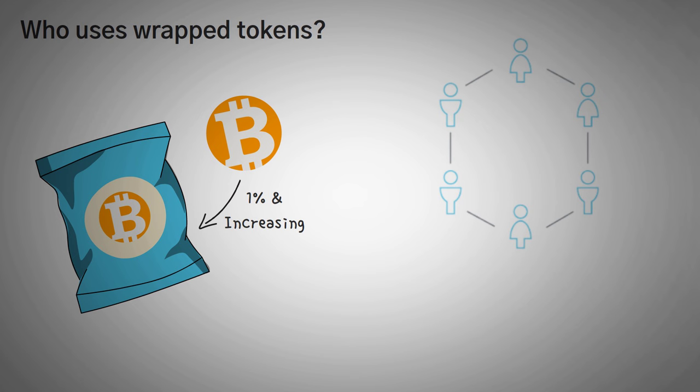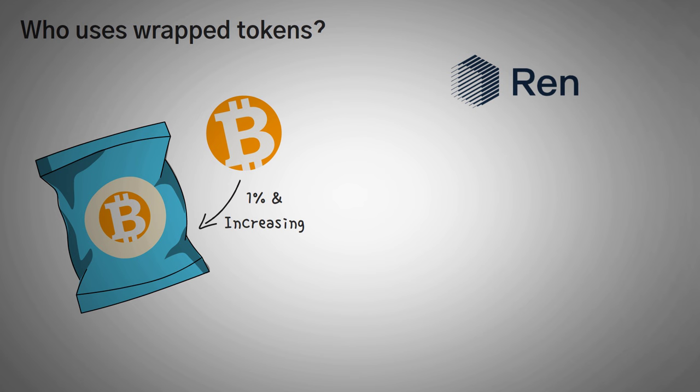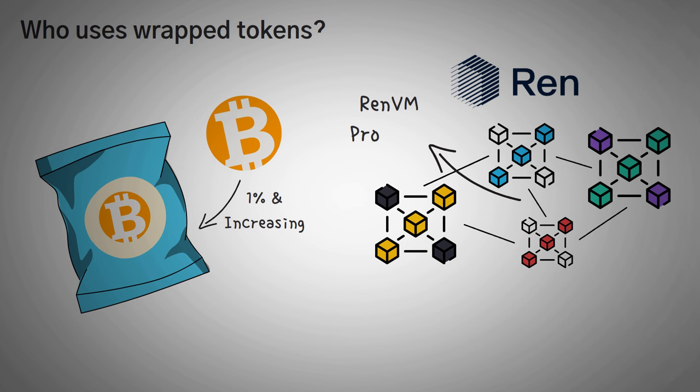It seems to be the case that as DeFi grows, the demand for wrapping all kinds of coins to use on Ethereum is also growing. For example, a lot of people are using wrapped Bitcoins to interact with decentralized applications to earn an interest rate, or even create leveraged positions. A company called REN has expanded blockchain interoperability using what they call the RENVM protocol. This lets users create wrapped tokens on Ethereum, like wrapped Bitcoin, wrapped Zcash, wrapped Bitcoin Cash, and many other tokens.